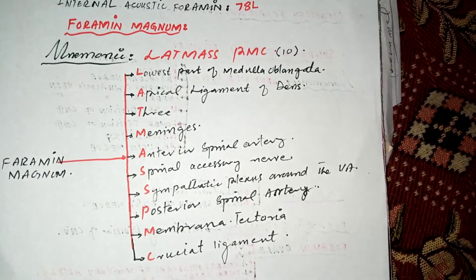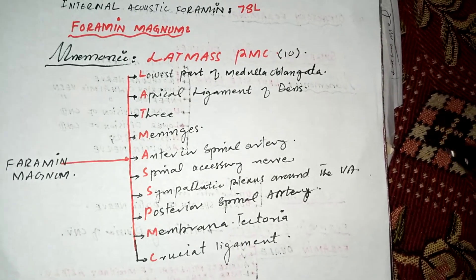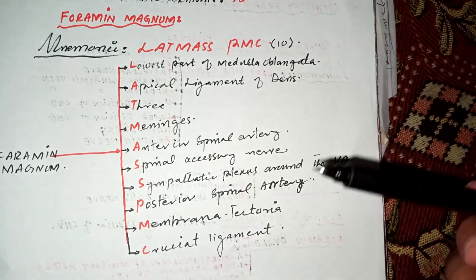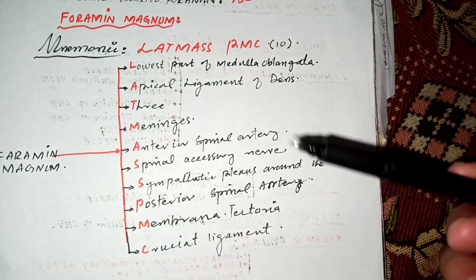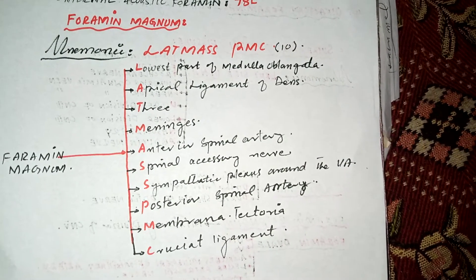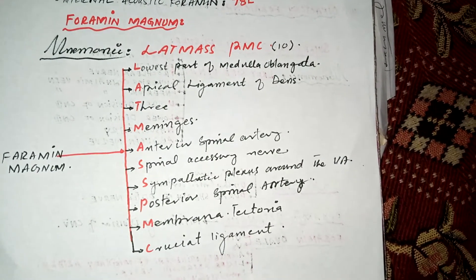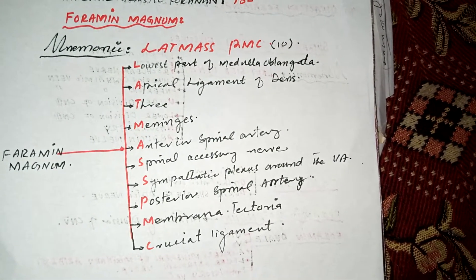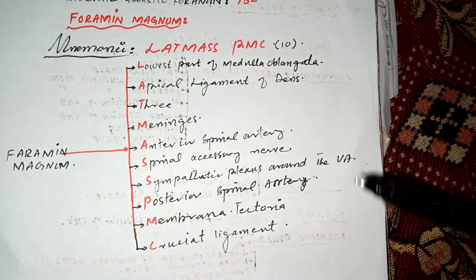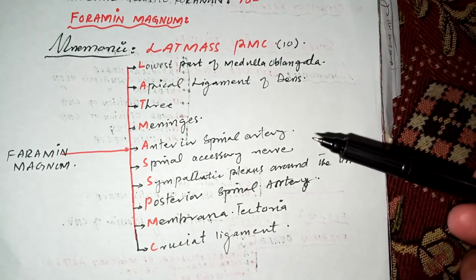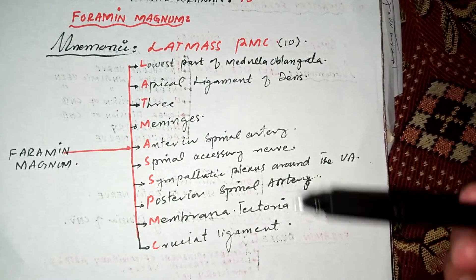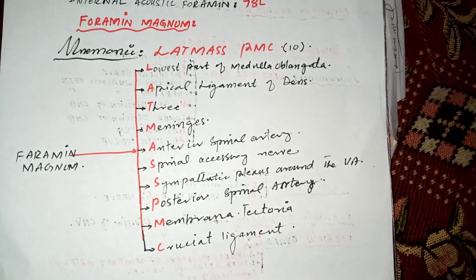Assalamu alaikum friends. Today we will discuss the mnemonic for the foramina and the structures passing through these foramina in the skull. First we should know about the foramina — it is actually the hole present in the skull for the passage of nerves and blood vessels.